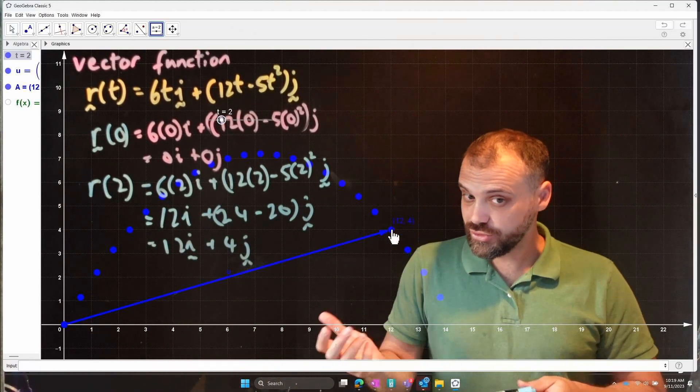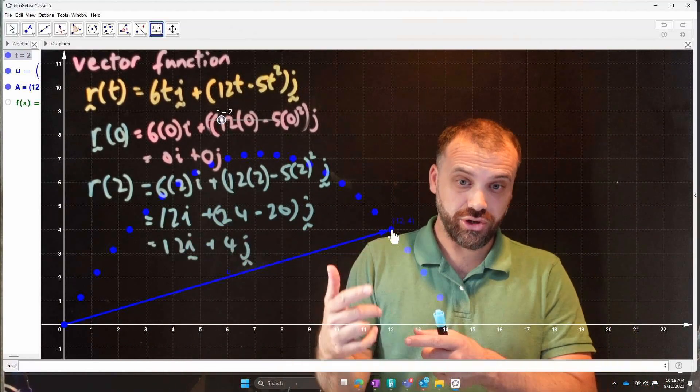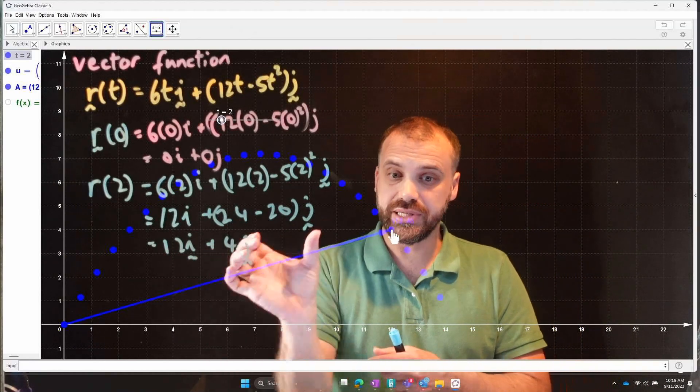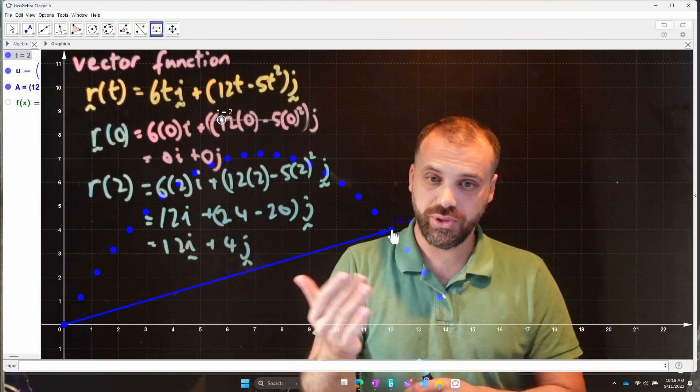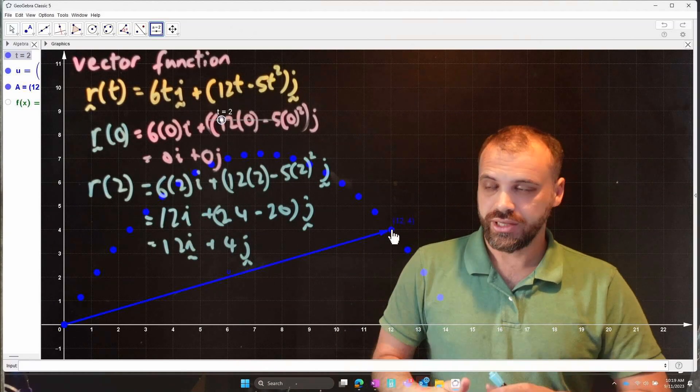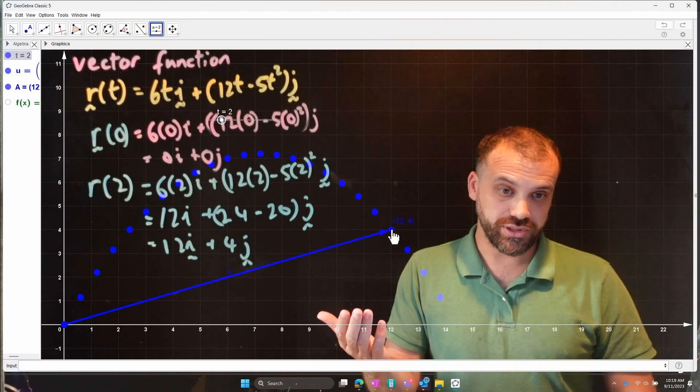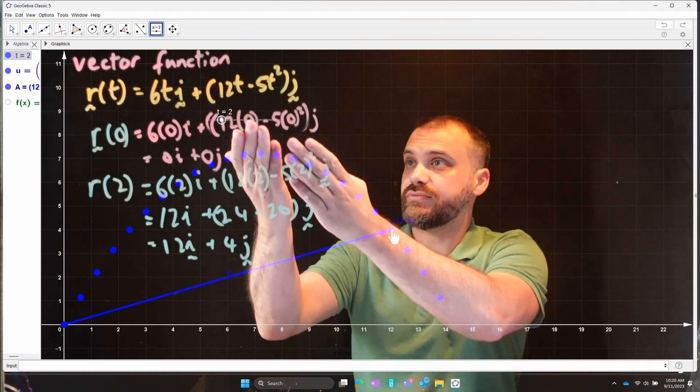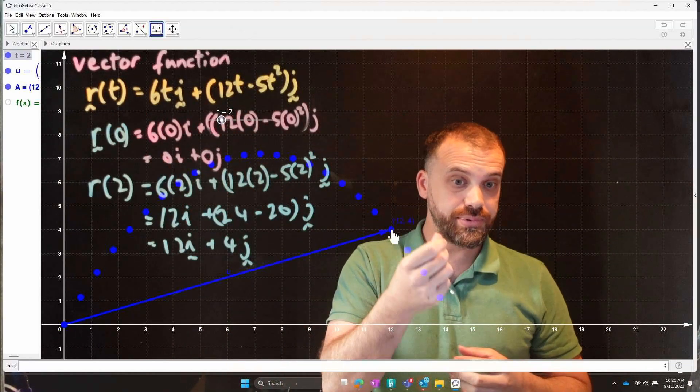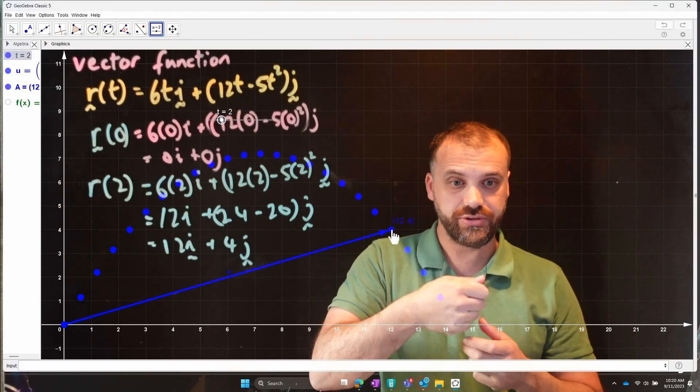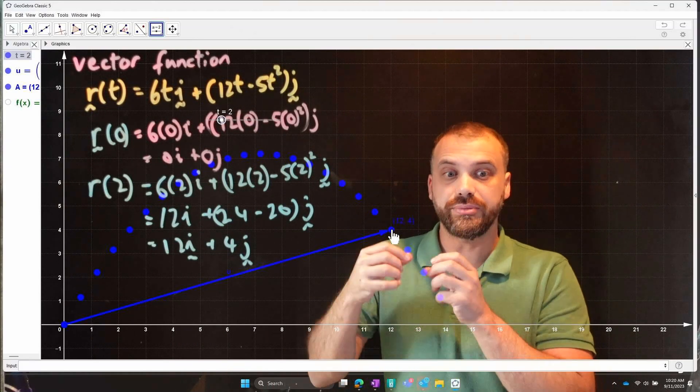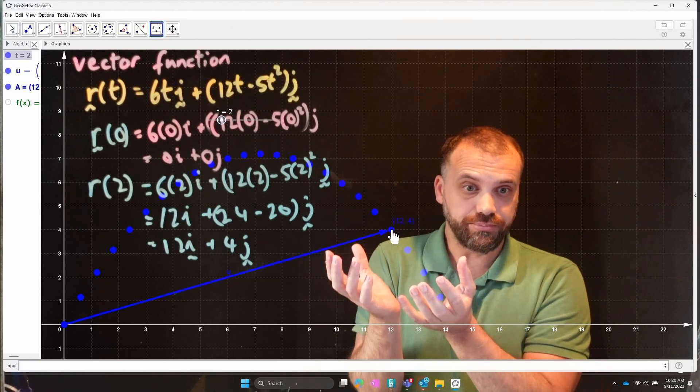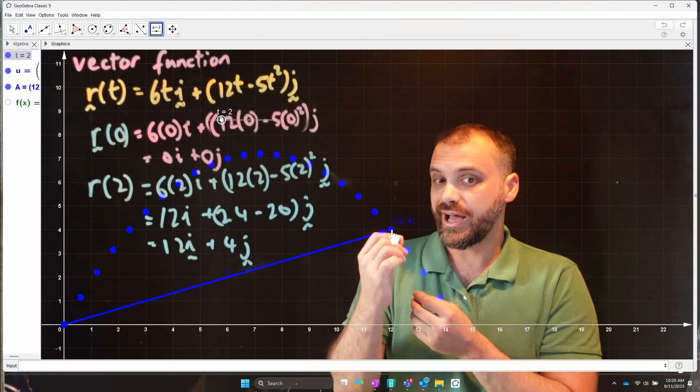12i plus 4j. Aren't vector functions useful, right? If you've got a time, you can find its position at that time, 12 across and four up, its position in terms of i and j coordinates. So that's your first big lesson here. If you're given a vector function, you can sub in a value for t into your vector function, and you can find the position of your particle, your ball, whatever it might be at that time.